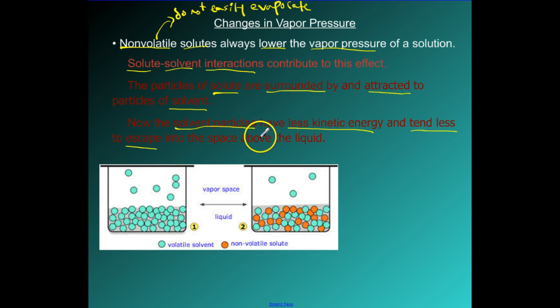You can see these two examples here: volatile solvent, which means it is going to easily evaporate, versus the red dots here are your non-volatile solute. They kind of block and they interfere with the solvent evaporating into its gas phase. Therefore the pure solvent is always going to have a higher vapor pressure than something that has a solute dissolved into it.